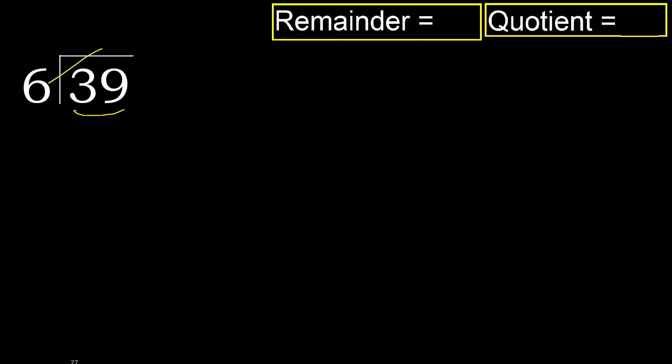6 multiplied by which number is nearest to 39 but not greater? 6 multiplied by 7 is 42 — 42 is greater. Multiply by 6: 36 is not greater.